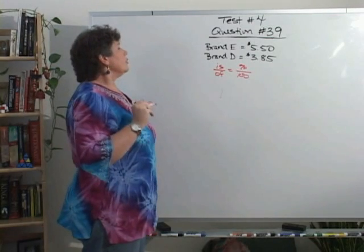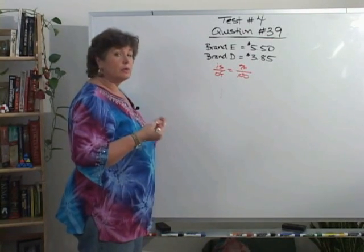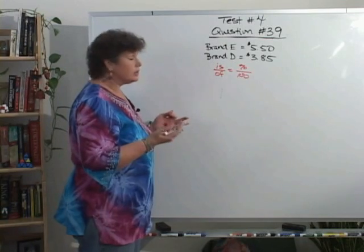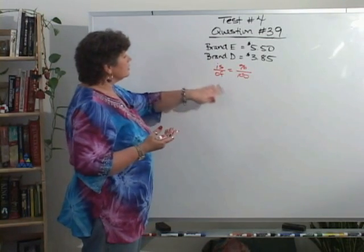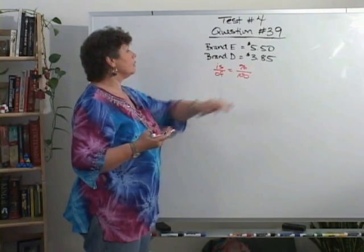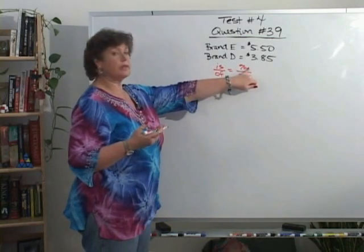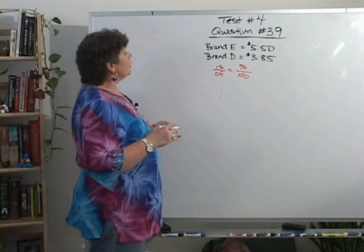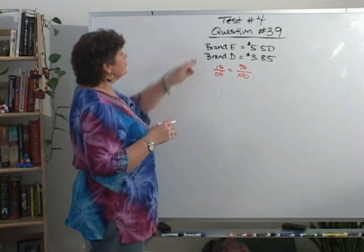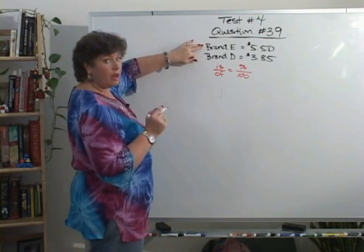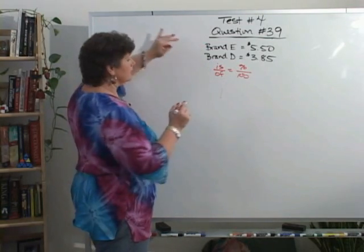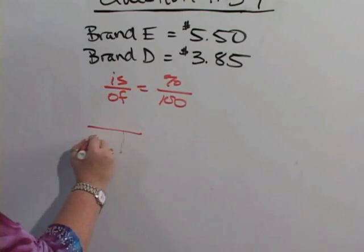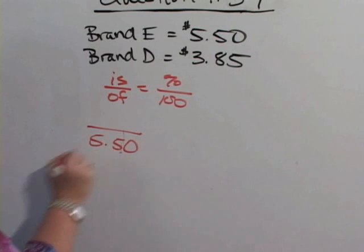Now, sometimes you have to reword the question to figure out what is your is and your of, and the percent is what we're looking for, so we know that's X right now. They are asking for what percent of brand E, so of is going to be $5.50.